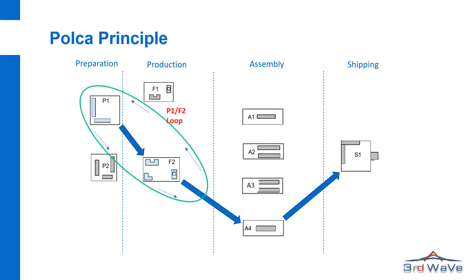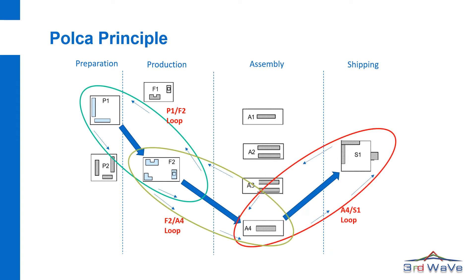The cells are paired with downstream cells by loops. For each loop or pair of cells we have Polka cards available. The Polka cards represent a product-independent capacity signal that indicates availability of capacity at the downstream cell. Dependent on the product and the quantity, one or multiple cards are assigned to a production order.